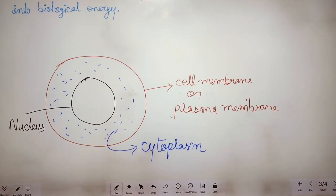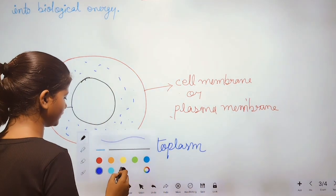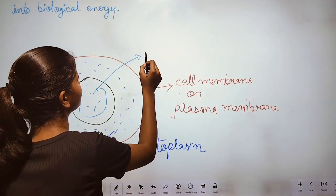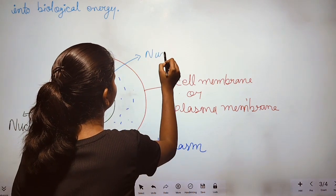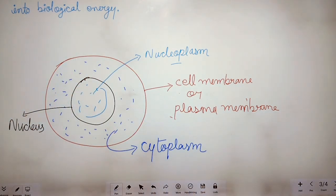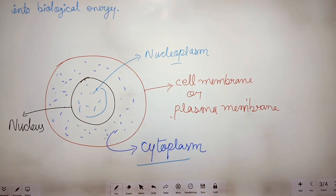Inside the cell membrane we also have the nucleus, and inside the nucleus a jelly-like material is present, which is known as nucleoplasm. The nucleoplasm and cytoplasm are collectively known as protoplasm.